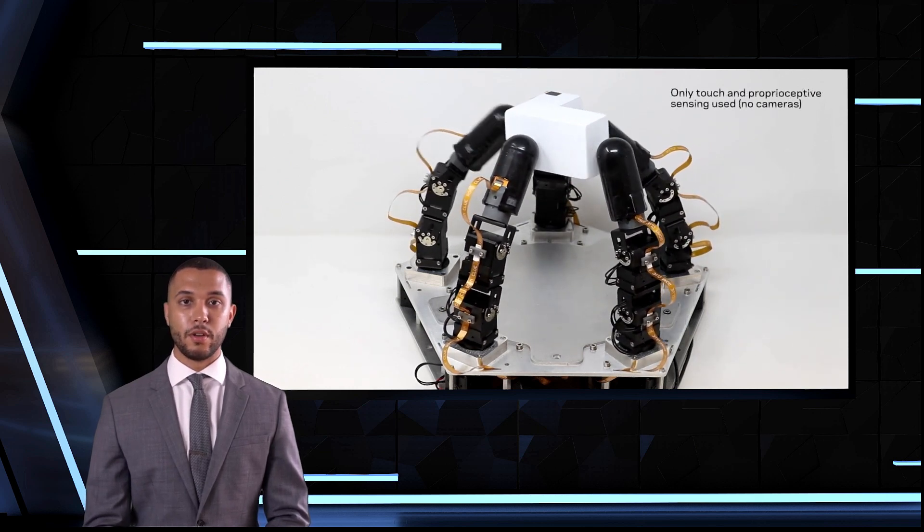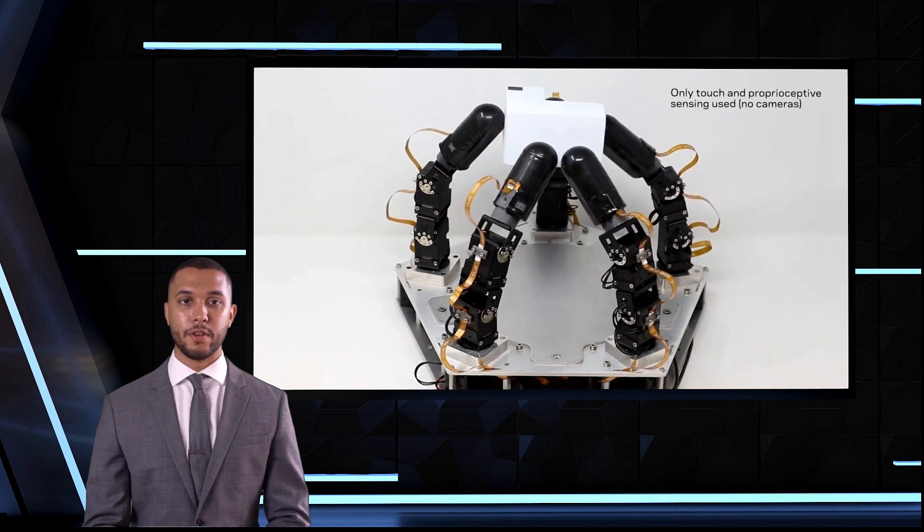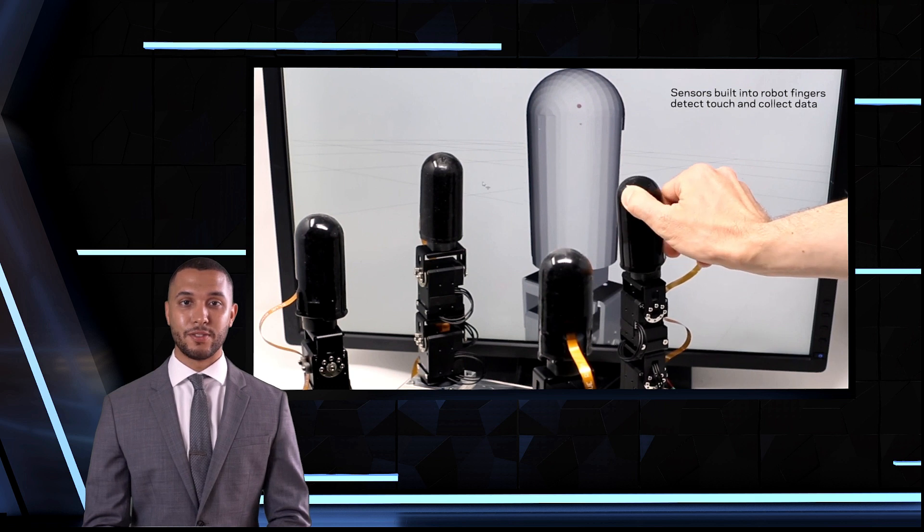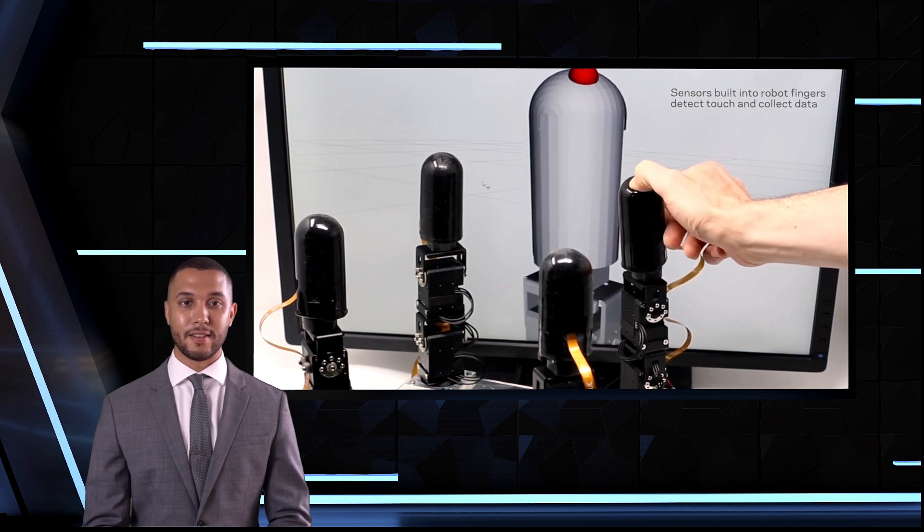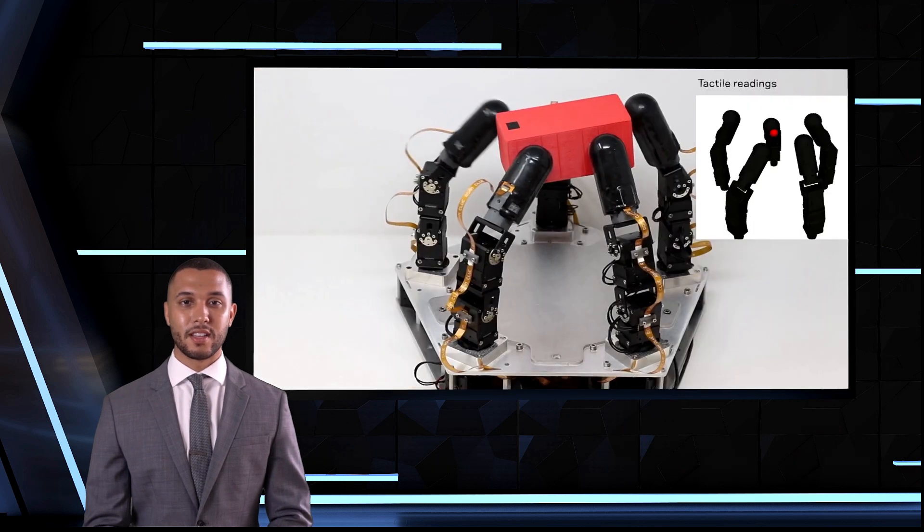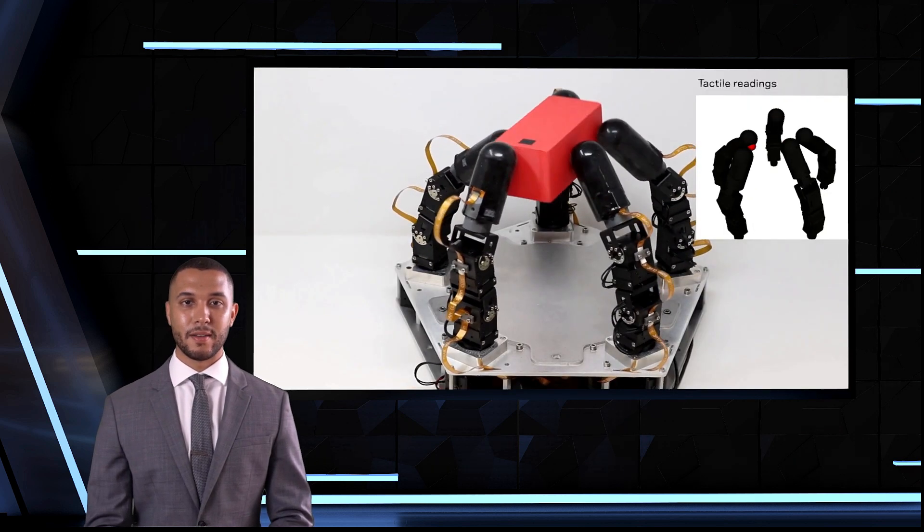A team of engineers at Columbia University has designed a prototype of a genuinely dexterous robot hand that doesn't rely on vision to manipulate objects. This is significant because it means that the robot can operate in the dark and manipulate more complex objects while securing them at all times.